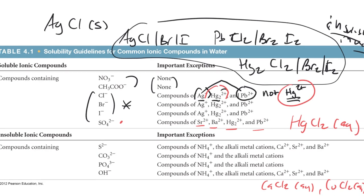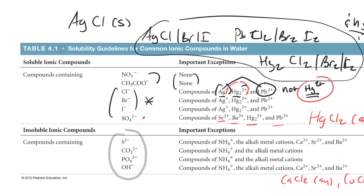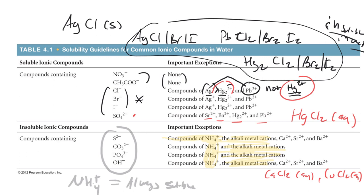Other ions tend to form compounds that are often insoluble in water: sulfide, carbonate, phosphate, and hydroxide ion. When these ions are paired up with just about anything, they make an insoluble compound. However, we have exceptions: ammonium salts (NH₄⁺) are always water soluble, and the alkali metal cations are also always water soluble. In fact, alkali cations can be paired with anything and they're always soluble.